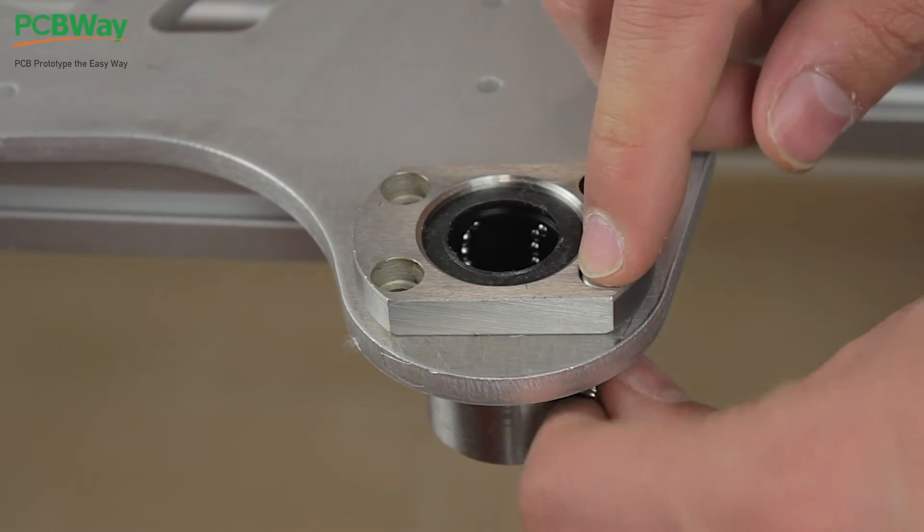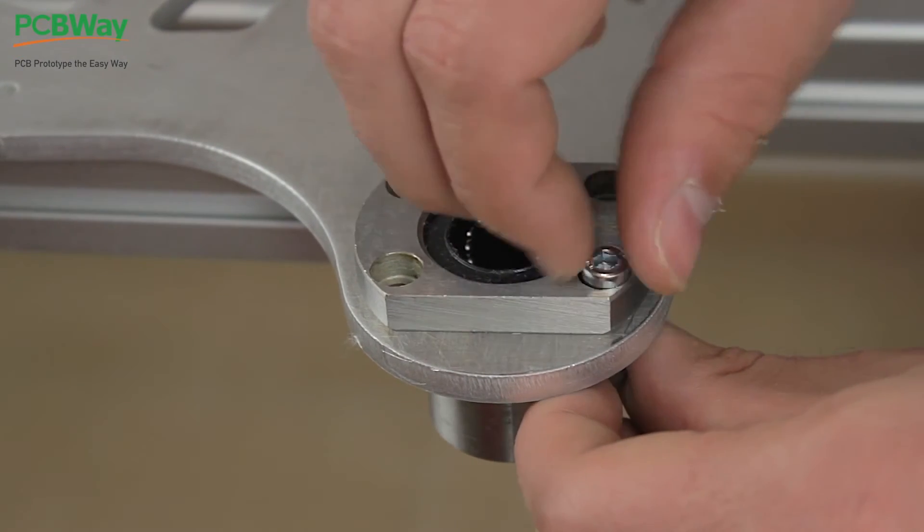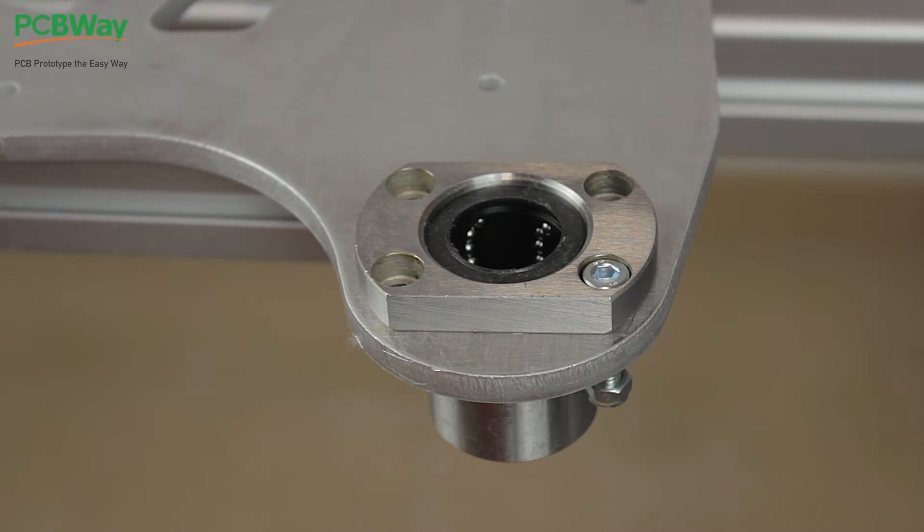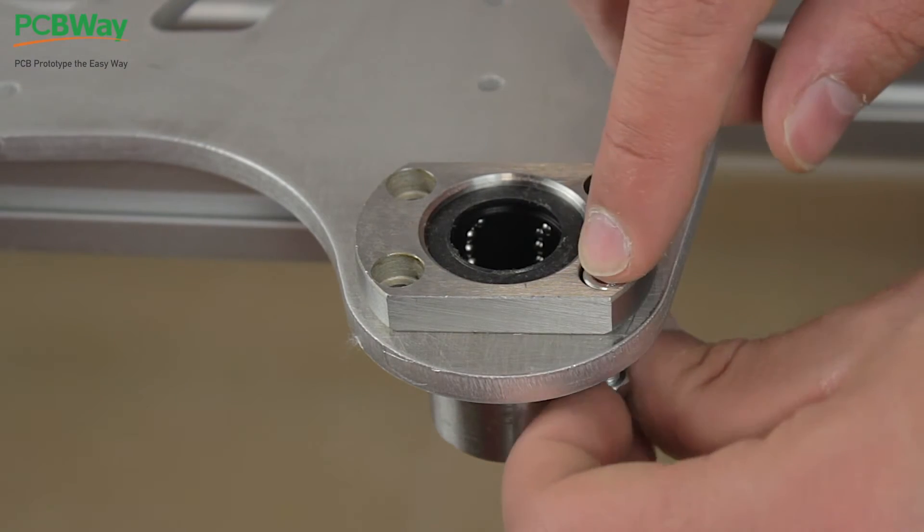These linear bearings are going to be attached with M5 allen bolts and nylock nuts that you will find in the list of components down in the description of the video.